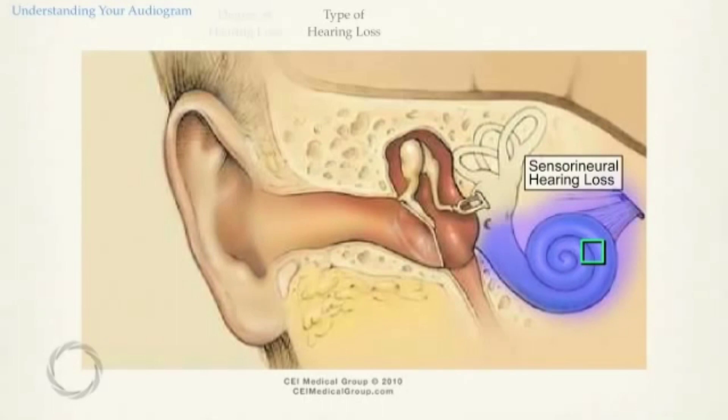A sensorineural hearing loss, also referred to as nerve damage, occurs when damage has occurred to the hearing organ or beyond. This is the type of hearing loss that can occur from excess noise exposure. Nerve damage is permanent. Therefore, people with this loss may find benefit from hearing aids or even a cochlear implant.